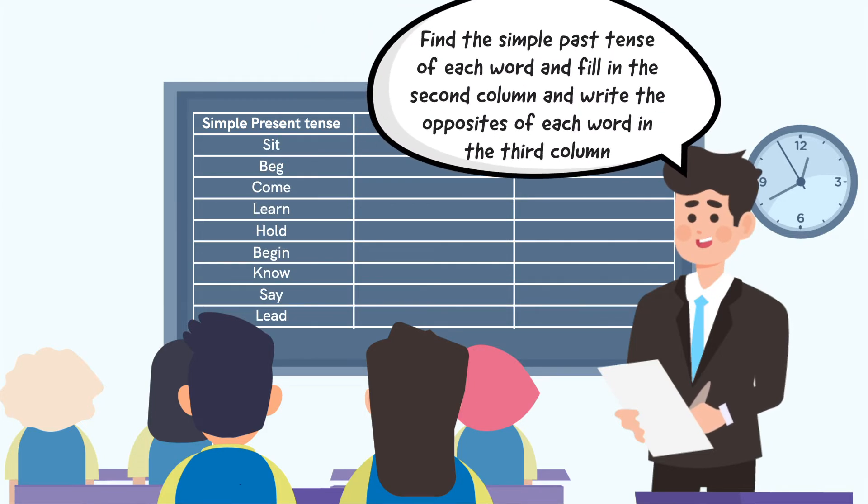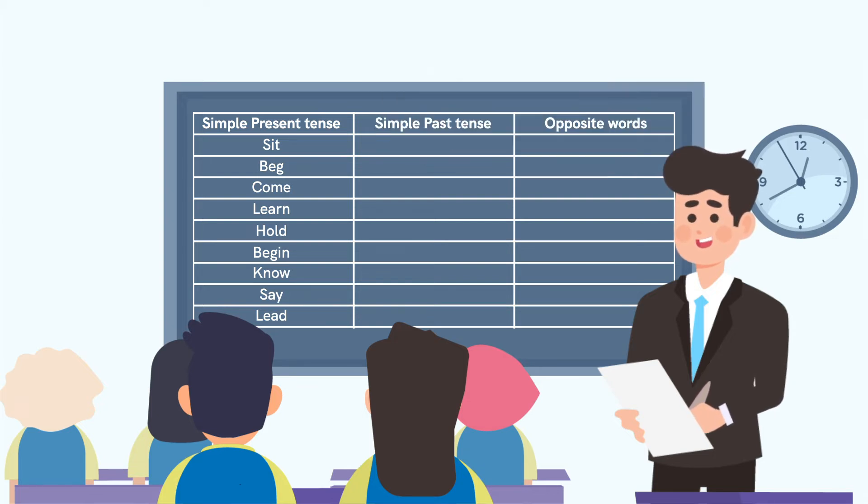Tell the students that they have to find the simple past tense of each word and fill in the second column. Ask them to write opposites of each word as well in the third column. To make them understand better, fill the simple past tense and opposite of the first word.